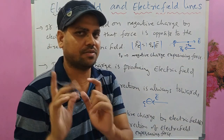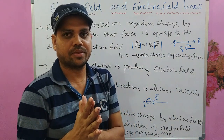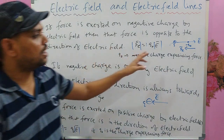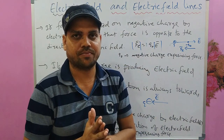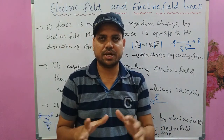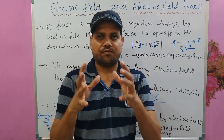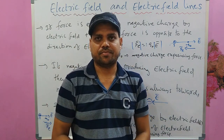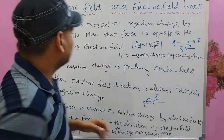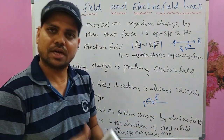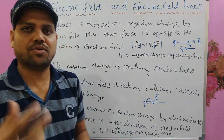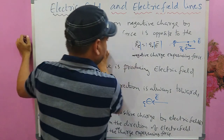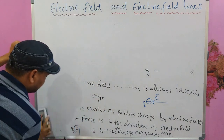Most important points to remember: electric field is always away from positive charge and towards negative charge. Force exerted on a positive charge is in the direction of electric field. Force exerted on a negative charge is opposite to the direction of electric field. Now, using this kind of interaction and Coulomb's law acting between two point charges, we can calculate the electric field due to a point charge.